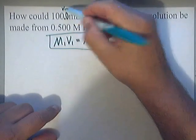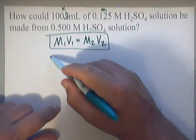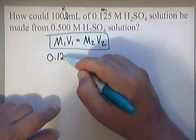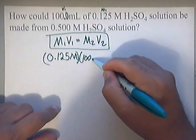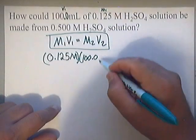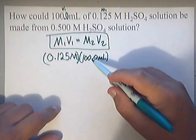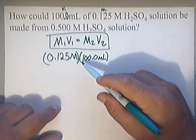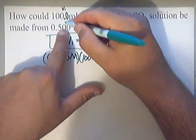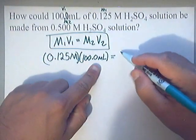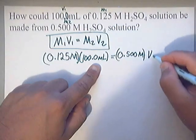The first volume is V1, and the first concentration is M1. So I'll plug in M1 = 0.125 molarity and V1 = 100.0 milliliters. If you want liters, move the decimal three places: 0.1000. This second molarity mentioned is M2 = 0.500 M, so I'm solving for the second volume, V2.